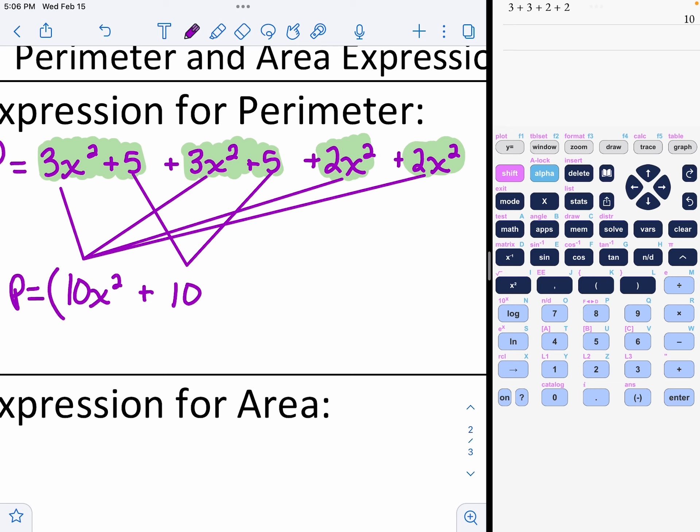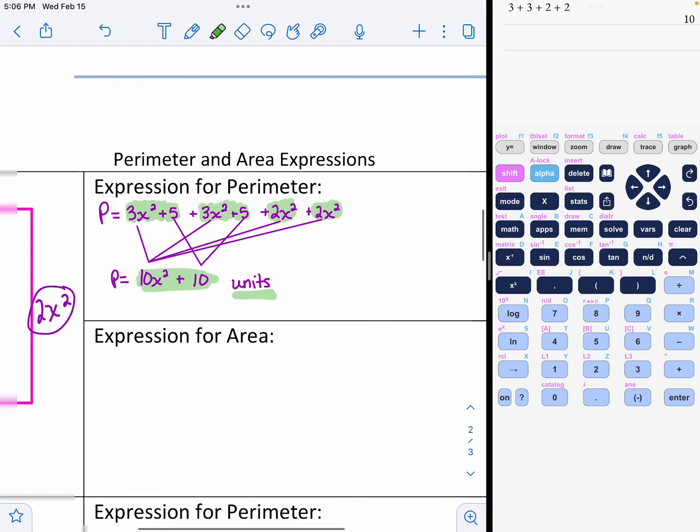And you remember when you add, you don't change your exponent. And let's see, I have a 5 and a 5, that's just a 10. So my perimeter is 10x squared plus 10. And then whatever it might be, maybe it's just units, maybe it's inches. You can put units behind that, whether it's feet or yards or whatever it might be.